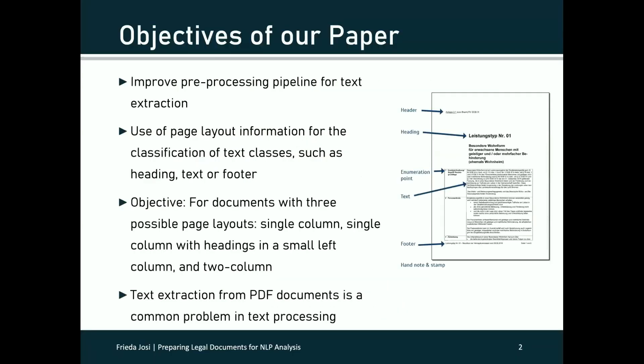Here are the objectives of our work. We want to improve the pre-processing pipeline for text extraction. We use the page layout information to improve the classification of text classes, such as header, text, or footer. Here on the right side is an example page in which some text classes are marked. We want to be able to identify the text elements in legal documents. We develop our process for documents with three possible layout pages: single column pages, single column pages with headings in the small left column, and two column pages. We develop this because text extraction from PDF documents is a common problem in text processing, and we need the extracted contract text in the correct reading direction for our work and further processing.